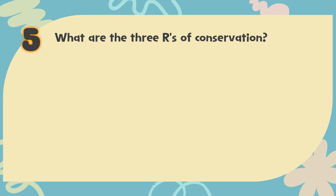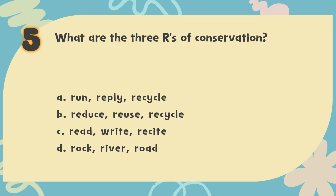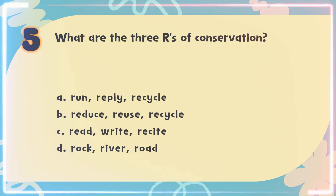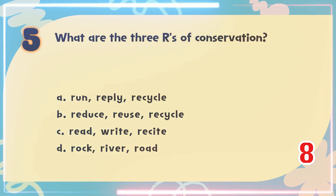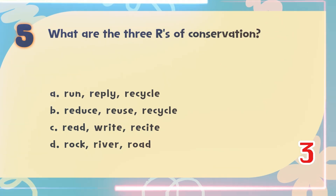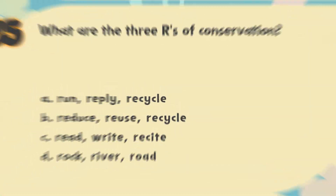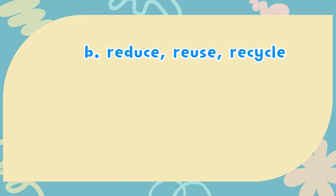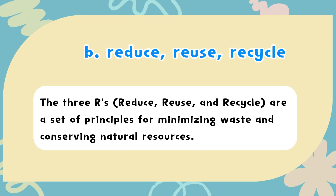Number 5. What are the three Rs of conservation? The choices are: A. Run, Reply, Recycle; B. Reduce, Reuse, Recycle; C. Read, Write, Recite; D. Rock, River. The correct answer is B. Reduce, Reuse, Recycle. The three Rs are a set of principles for minimizing waste and conserving natural resources.